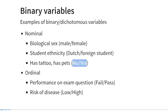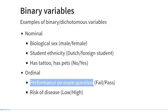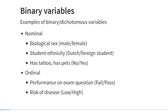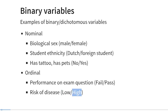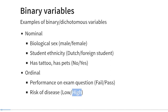Let's look at a few examples of ordinal binary variables. Performance on an exam question is arguably an ordinal binary variable — if you fail you score a zero, if you pass you score a one. Another example could be risk of disease, where there is a clear ordinal difference between low and high risk. For example, if you don't have a particular genetic marker you might have low risk, and if you do have that genetic marker you might have high risk.